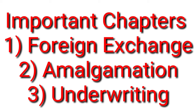The second chapter — Amalgamation — is very crucial and very important. You will get 2 questions on this chapter: one related to Purchase Consideration with the Net Assets Method, and one related to the Net Payment Method. Focus on both methods. Do not keep Amalgamation as an optional chapter because it is the favourite topic of the examiner.